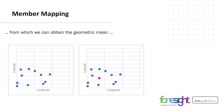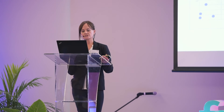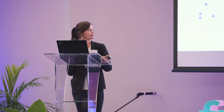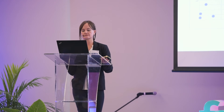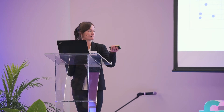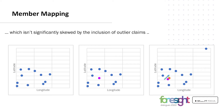Using the GPS coordinates of these interactions, we can derive the geometric mean, represented by the pink dot in the middle. The advantage of using the geometric mean is that it's not significantly skewed by the inclusion of outlier claims. For example, a claim which occurred quite far away from all other interactions, in the top right-hand corner, caused the geometric mean to shift only very slightly — going from the pink to the orange dot.